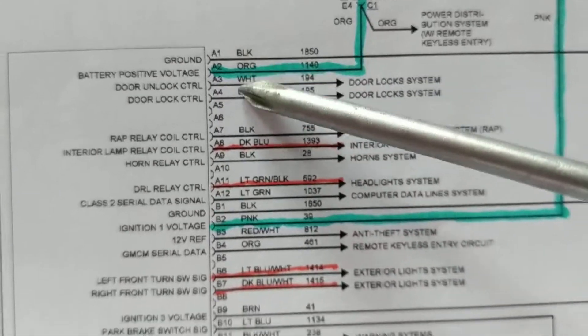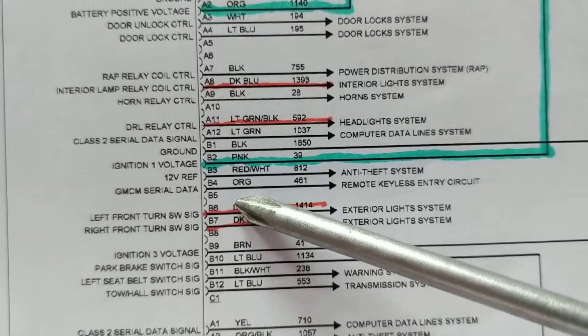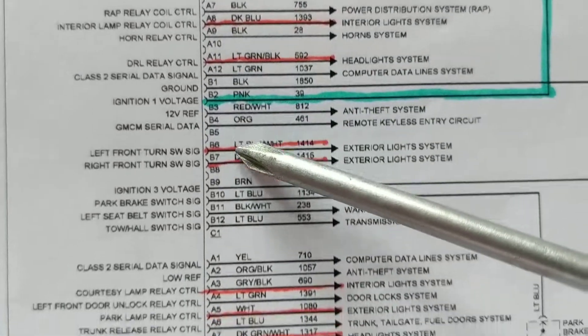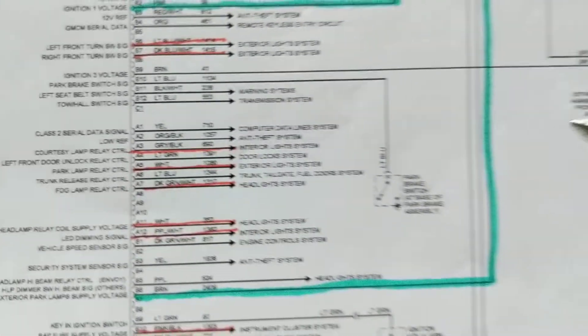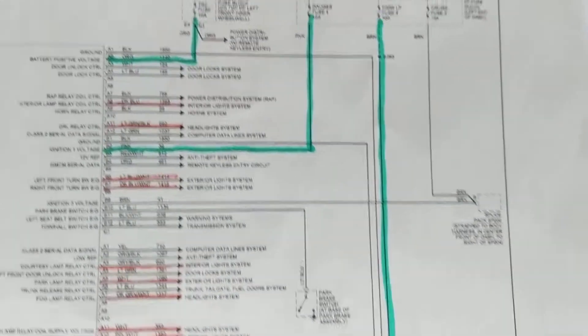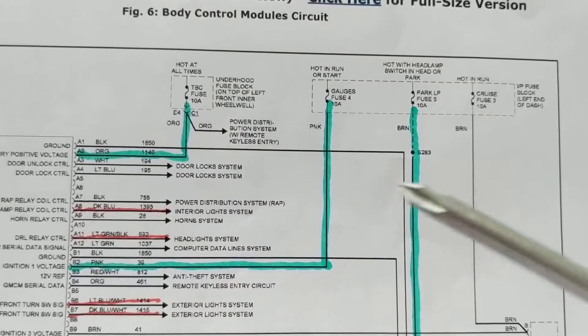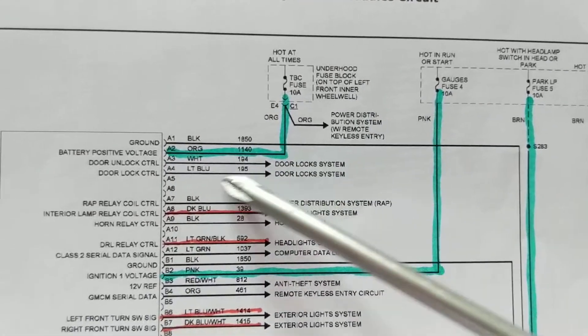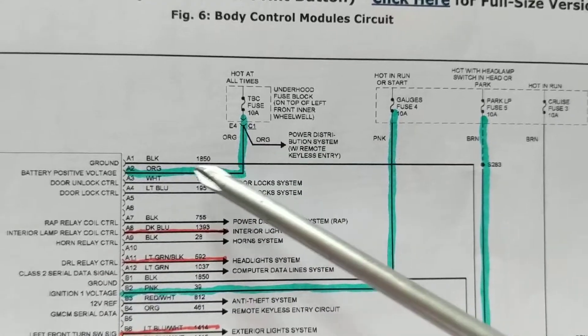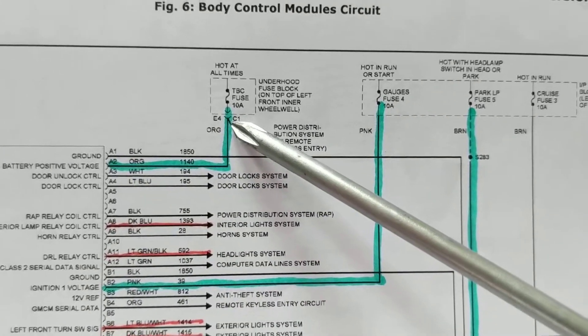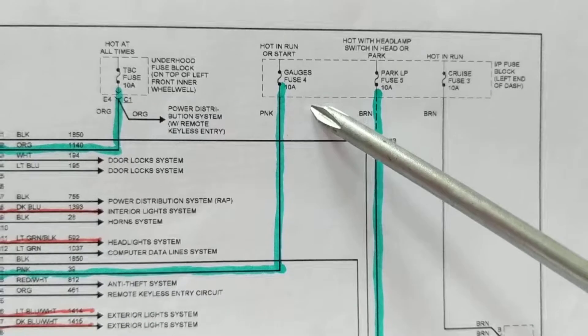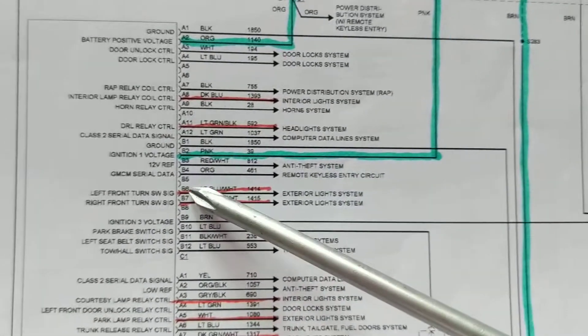Other thing is these modules need 12 volts. Always, as I'm putting in green, battery positive voltage - you always need 12 volts. And look at the amperage: 10 amps, not too much. Another one, 10 amps. So ignition voltage is 12 volts also.